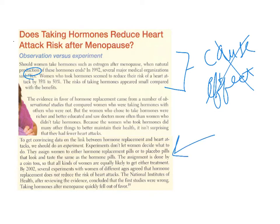To establish a cause-and-effect link, an experiment had to happen. In an experiment, the women wouldn't get to choose — they would be randomly assigned to either hormone replacement pills or the placebo pill group. Ideally, neither the women nor the treating doctor would know which one they received, since the doctor knowing could lead to different treatment and impact results. Once the actual experiment was conducted with groups taking hormone pills versus placebos across different ages and backgrounds, they found that hormones actually did not help lower the risk of heart attack, which changed the way older women were treated as they went into menopause.